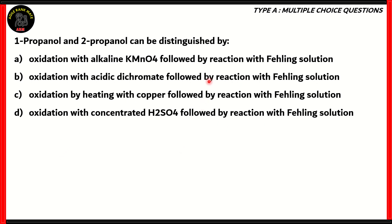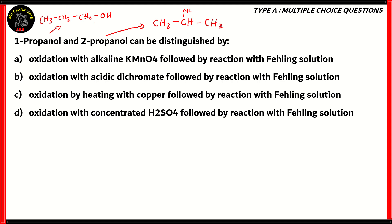So, which of these is the correct option? First of all, let's differentiate 1-propanol and 2-propanol. 1-propanol has the structure CH3-CH2-CH2-OH. For 2-propanol, the structure would be CH3-CHOH-CH3. The reason why it's called 1-propanol and 2-propanol is because of the functional group attaching to the carbon.